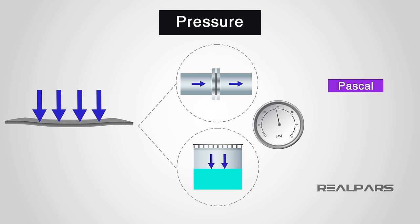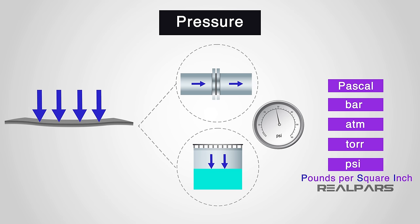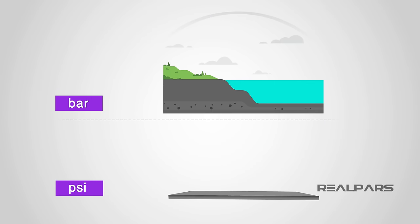Pressure is measured in one of the following five units: Pascal, Bar, Standard Atmosphere or ATM, Torr, and pounds per square inch or PSI.